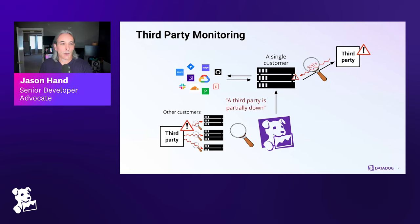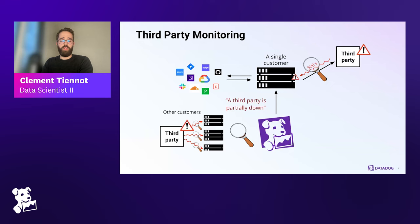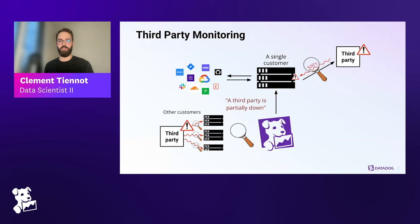Because we have data from a subset of customers, we can aggregate that data and say, at a high level, is this something happening for everybody? Is it an issue with the provider? And we can get that information and give it back to our customers to help them in troubleshooting, because knowing that can save quite some time rather than digging and finding out it's just this third party being down. One of the things we were talking about previously is that we may actually know a third party is having a problem before they've even put up a status page.